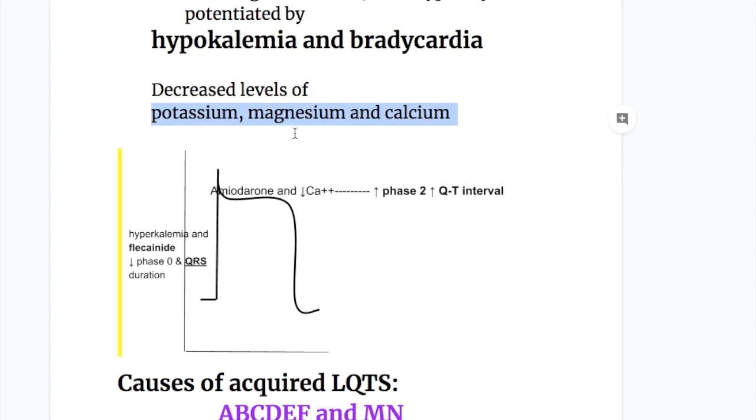Amongst electrolytes, decreased levels of potassium, magnesium and calcium cause acquired LQTS. How do potassium and calcium cause acquired LQTS? Potassium decreases the QRS complex duration, so hypokalemia will increase the QRS duration and increase the QT interval. Similarly it acts in the repolarization process, and a decrease in potassium will increase the repolarization time and increase the QT interval. Whereas calcium acts on phase two of the isoelectric line, and decreased calcium causes increase in phase two that causes increased QT interval and causes LQTS.